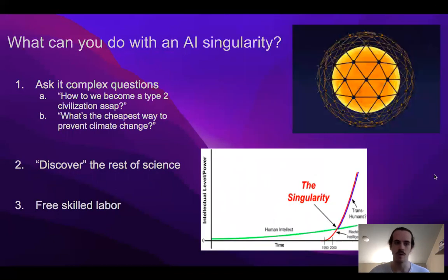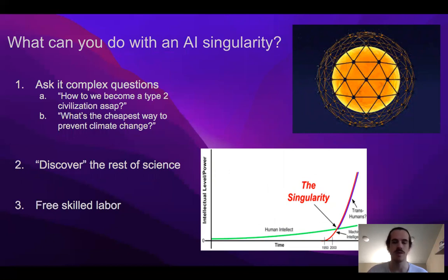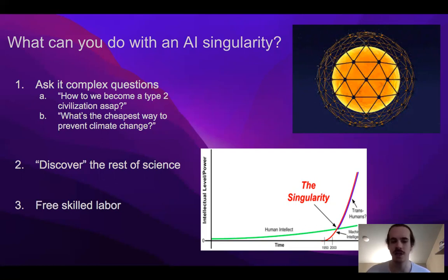If we were able to do this, what could we accomplish? We could ask it very complex questions such as how to become a type 2 civilization as soon as possible. We are currently a type 1 civilization, meaning we get all our energy from Earth. A type 2 civilization gets all its energy from our star, which we'd do by creating a Dyson swarm — essentially a shell of solar panels surrounding the Sun — increasing the amount of energy we can use by many orders of magnitude.